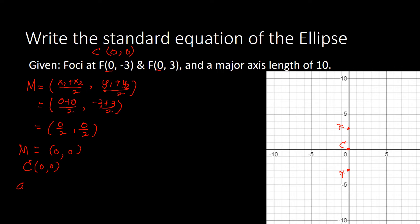We need A and B for our A squared and B squared. We are given a major axis length of 10. Since the foci and vertex are always on the same axis, the ellipse is vertically oriented. The major axis length equals 2A, so if 2A = 10, then A = 10/2 = 5. So we've got A = 5.